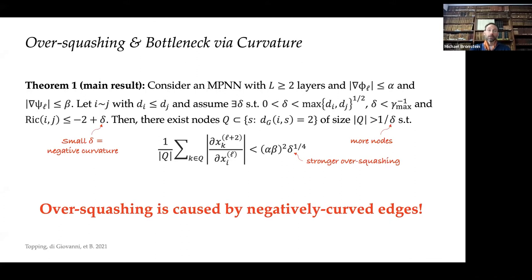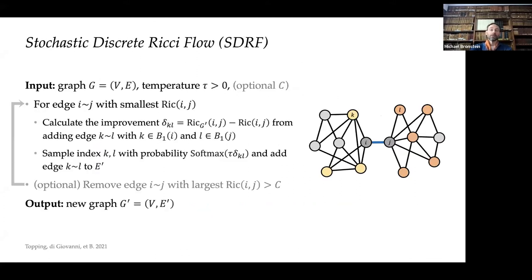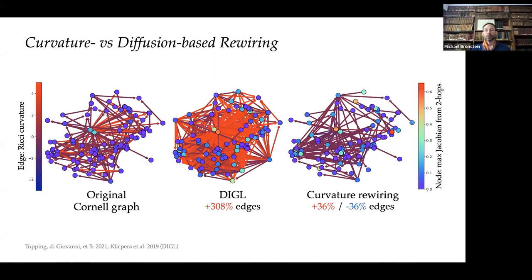Understanding that over-squashing is caused by negatively curved edges, we propose a graph rewiring scheme that surgically removes negatively curved edges and replaces them with edges contributing to higher curvature. Compared to diffusion-based approaches like DIGL (which uses personalized PageRank), our curvature-based rewiring performs significantly better, particularly in heterophilic settings where DIGL struggles. This paper received an outstanding paper honorable mention at ICLR.